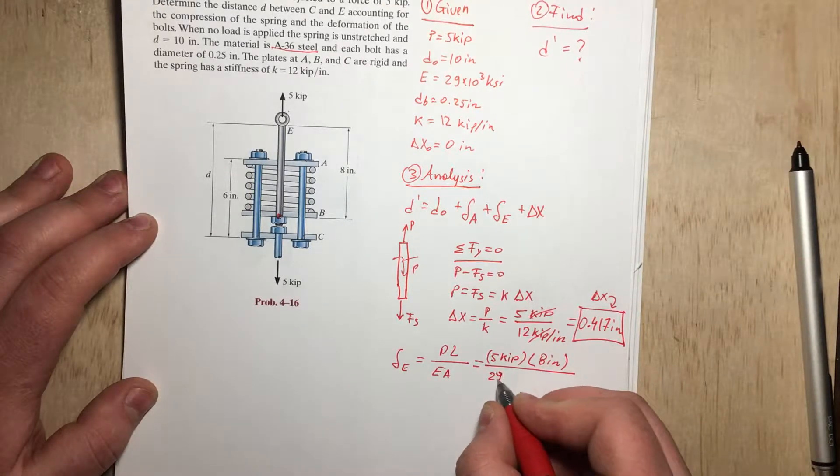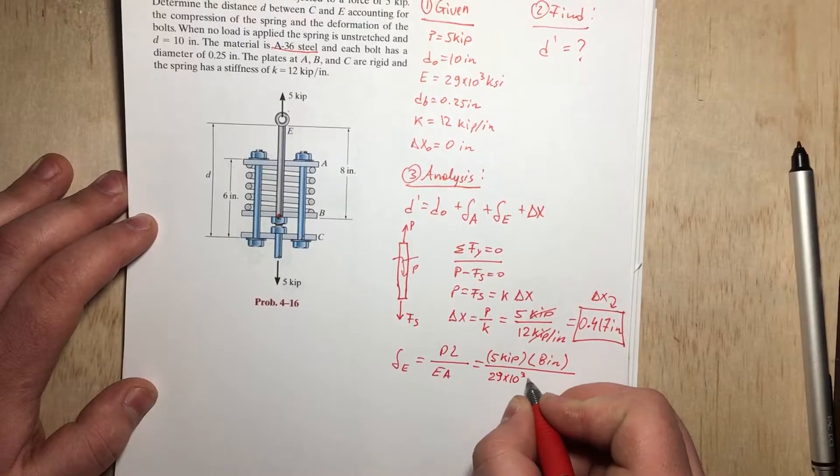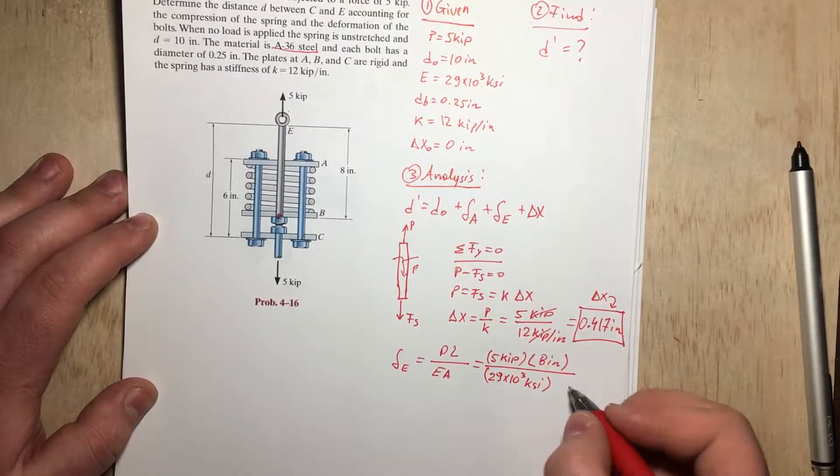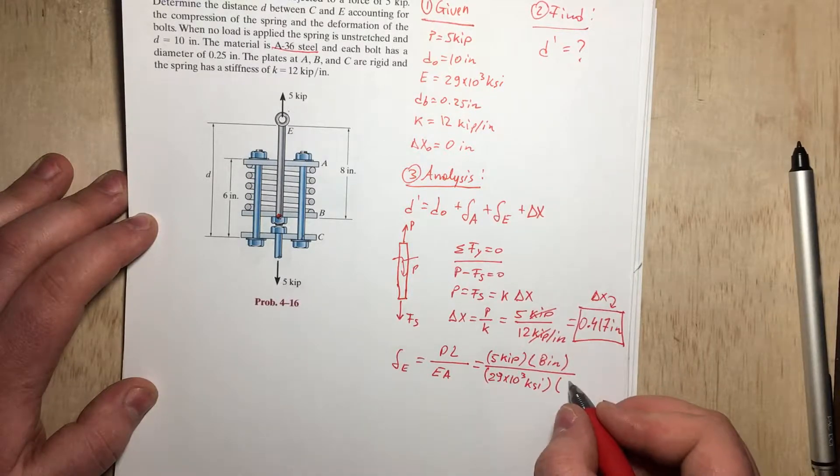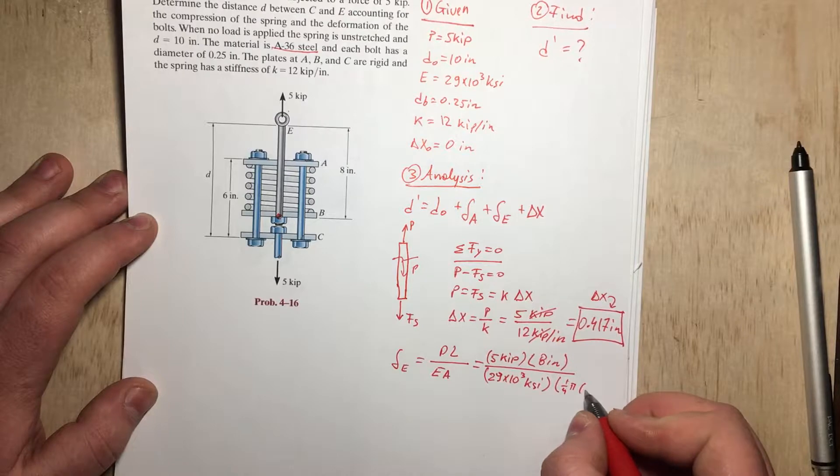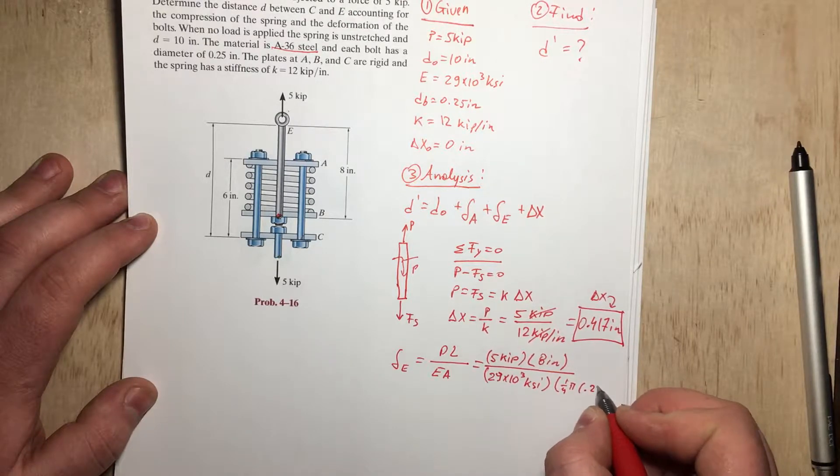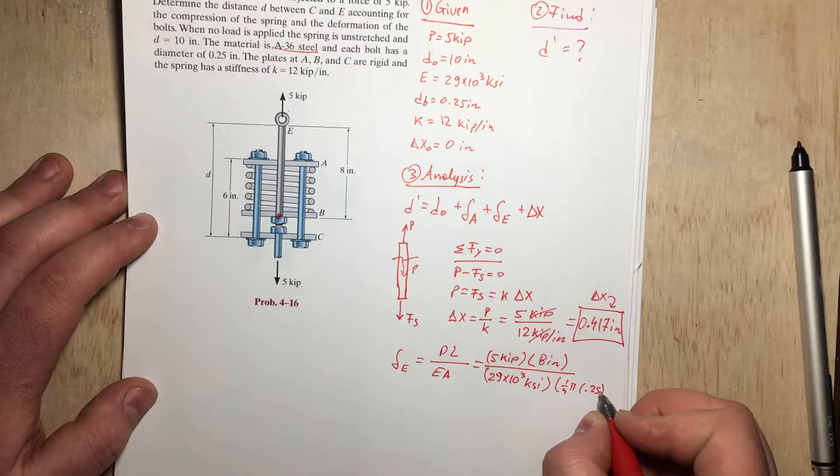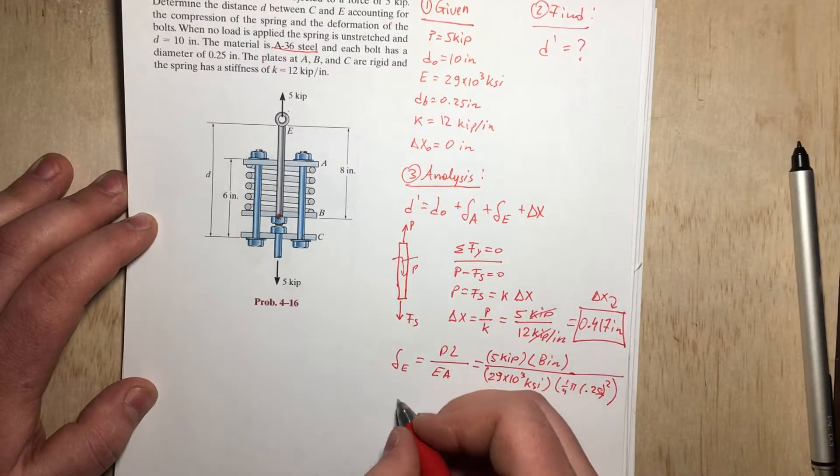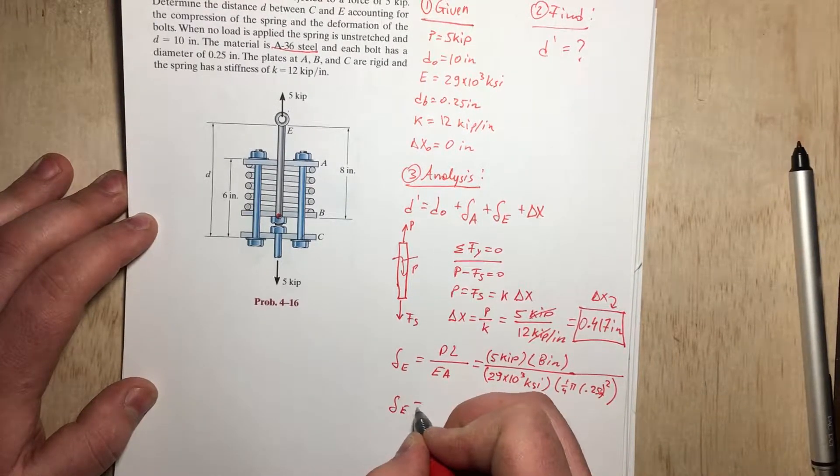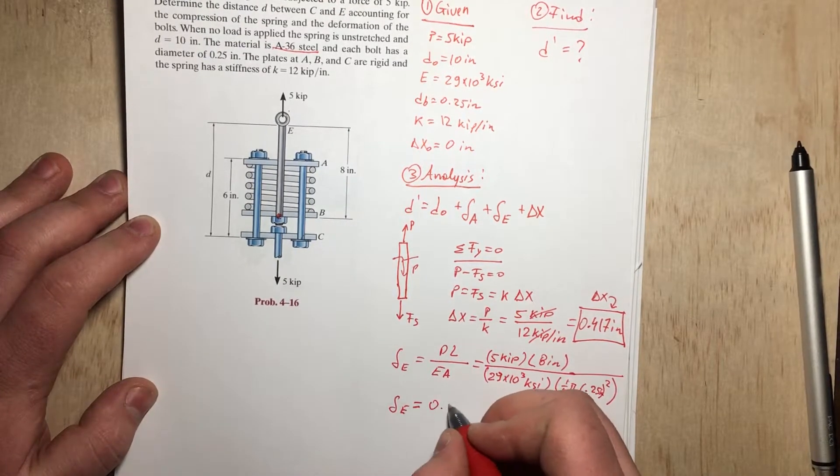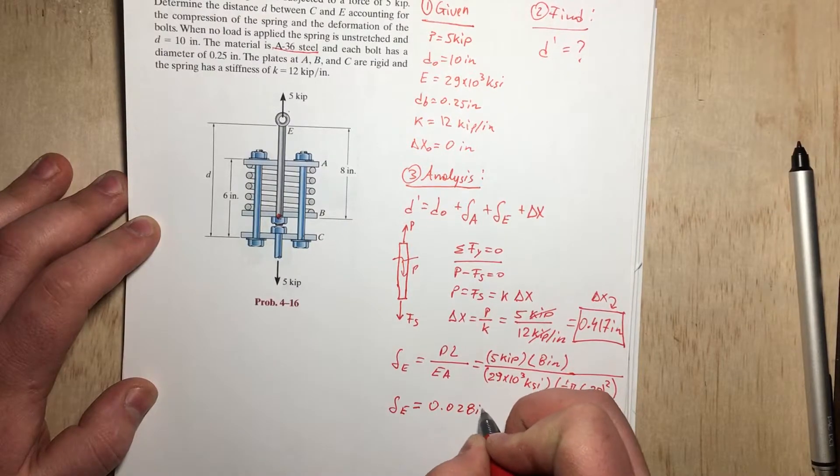Divided by E, which is 29 times 10 to the third ksi, kip per square inch. And we also have the area, which is 1/4 pi times diameter squared, and our diameter is 0.25, and that's of course inches squared. So if we plug everything in, delta E is going to be equal to 0.028 inches.